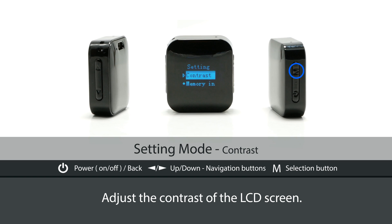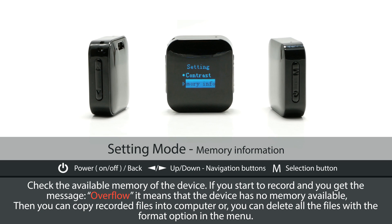Contrast. Adjust the contrast of the LCD screen. Memory Information. Check the available memory of the device. If you start to record and you get the message 'overflow', it means the device has no memory available. You can then copy recorded files to your computer, or delete all the files using the format option in the menu.